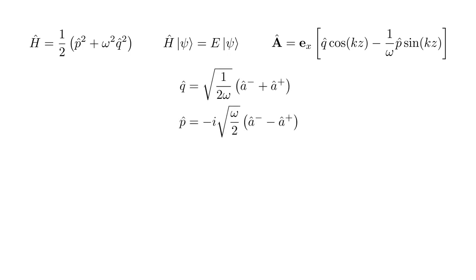q̂ and p̂ can be expressed in terms of the creation and destruction operators, â† and â. With these substitutions, Â becomes e_x√(1/2ω) times the quantity [(â + â†) cos(kz) + i(â - â†) sin(kz)].